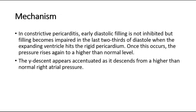For its mechanism, in constrictive pericarditis, early diastolic filling is not inhibited, but filling becomes impaired in the last two-thirds of diastole when the expanding ventricle hits the rigid pericardium. Once this occurs, the pressure rises again to a higher than normal level. The Y-descent appears accentuated as it descends from a higher than normal right atrial pressure.